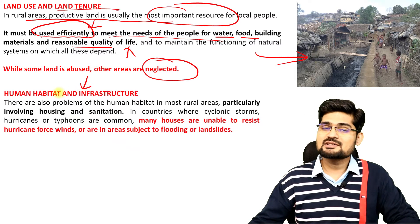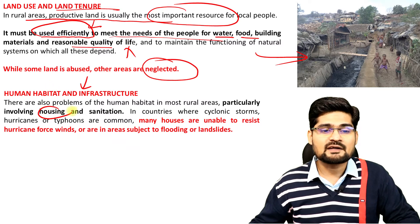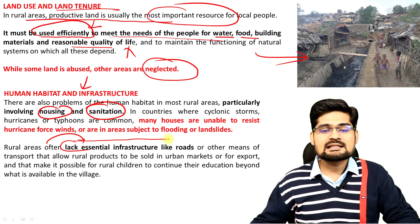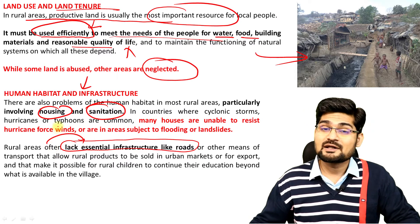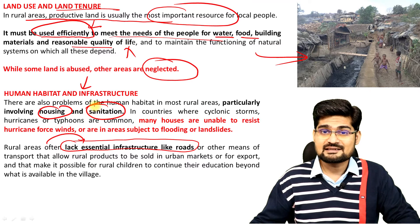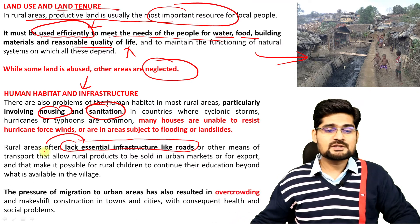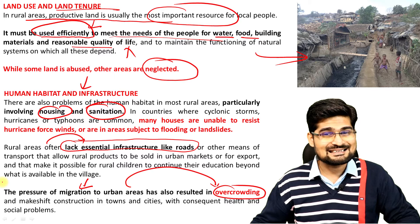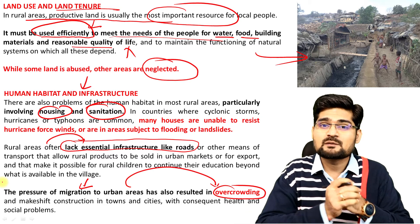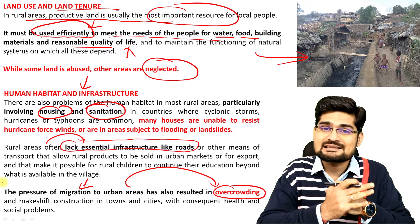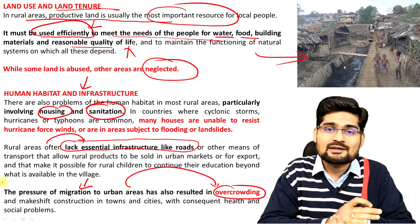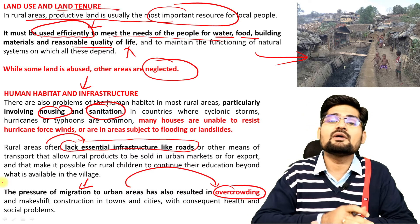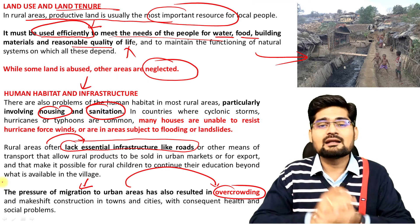Human habitat and infrastructure — particularly involving housing and sanitation — has a lot of problems. Rural areas often lack essential infrastructure like connectivity and accessibility depending on roads and other facilities. The pressure of migration to urban areas is resulting in overcrowding of cities. During the pandemic, we observed that people went in reverse, especially in some states in India, but they had to come back to urban areas because there are not enough opportunities available in rural areas.